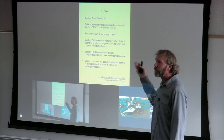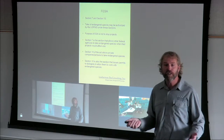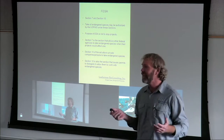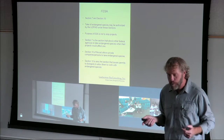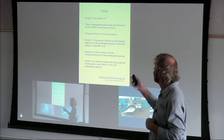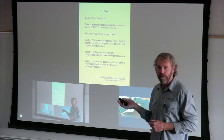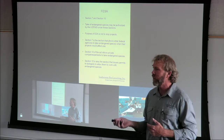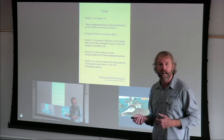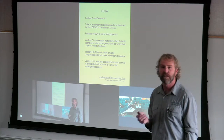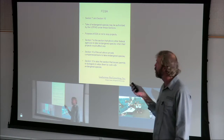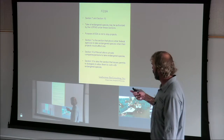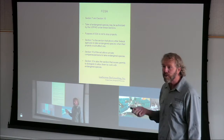Sections 7 and 10 of the Federal ESA allow projects to go forward even if they may result in take of endangered species, as long as appropriate actions are taken to minimize or avoid those impacts to the extent possible. The US Fish and Wildlife Service can issue permits allowing take under these two sections. Section 7 is for federal agency projects — agencies like BLM or the US Forest Service can do projects that might affect the desert tortoise or spotted owl. Section 10 is for private projects and private developments.